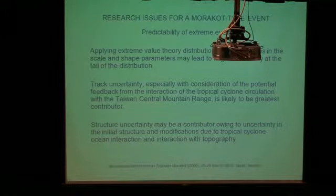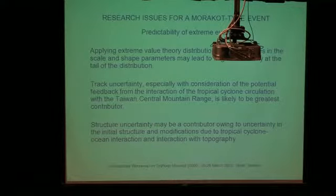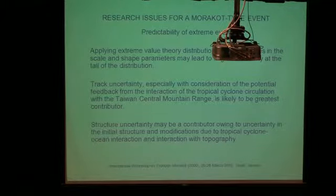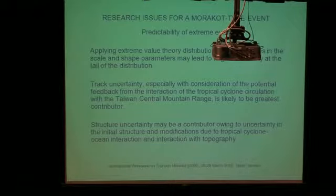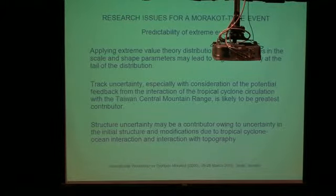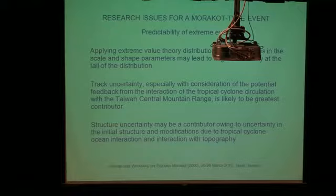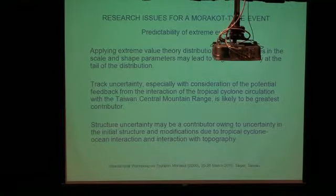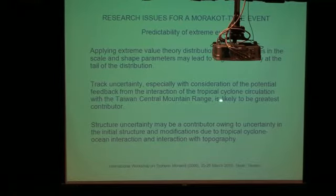Some comments about where I see research issues. First, what's the predictability of these extreme events? I heard a talk by Greg Holland from NCAR about extreme value theory distributions — where you are out on the tail. Clearly Morag was an extreme event in terms of precipitation, but how predictable is that when slight changes in the scale or shape parameters could lead to a big change in the tail? Track uncertainty is also still not a solved problem, because of the interaction of the tropical cyclone circulation with the central mountain range.